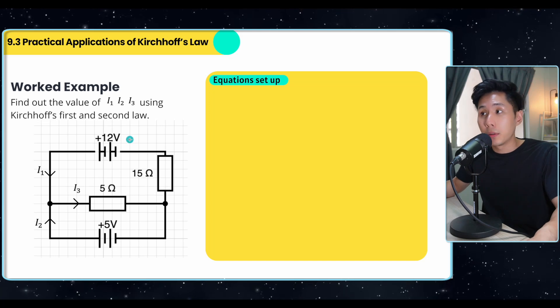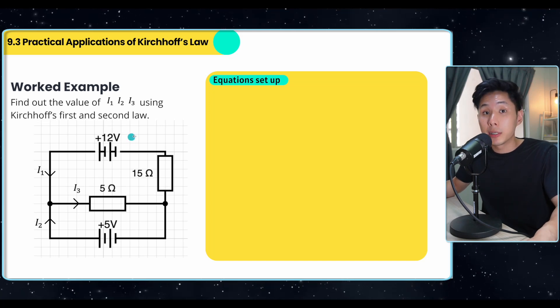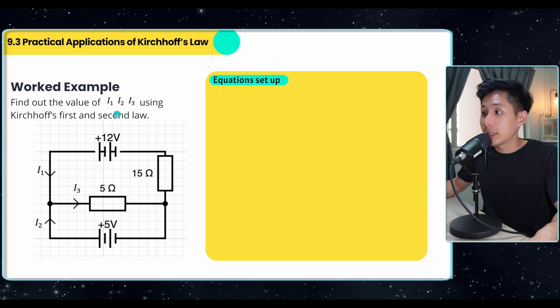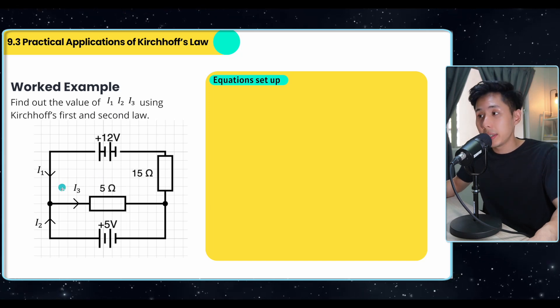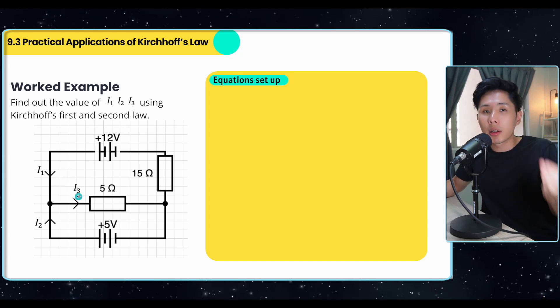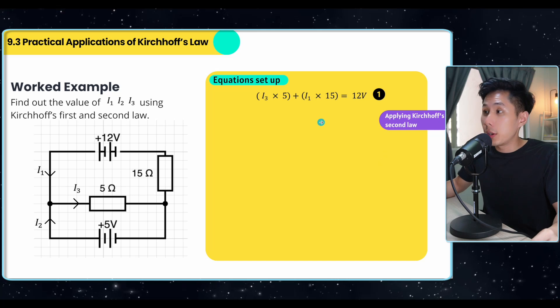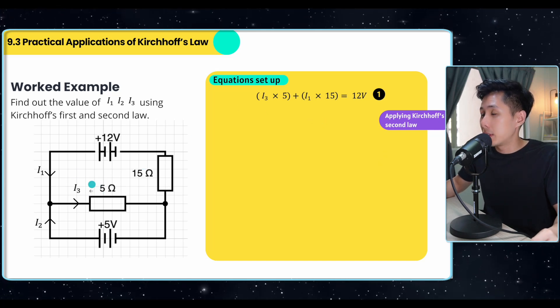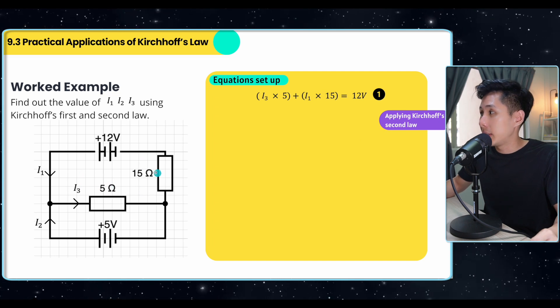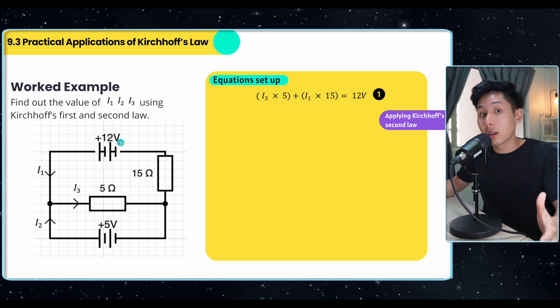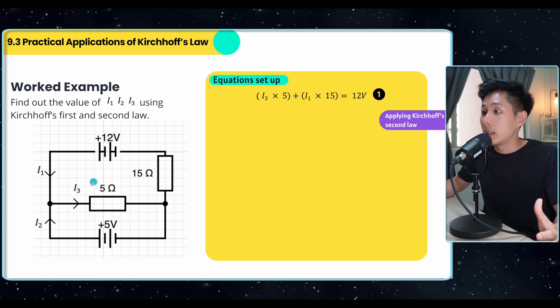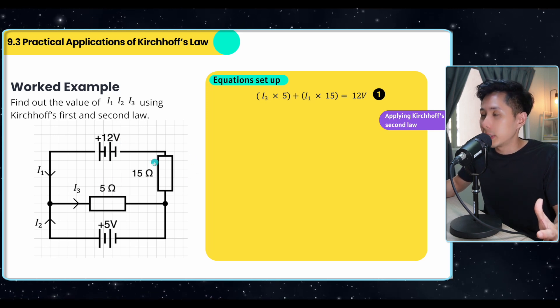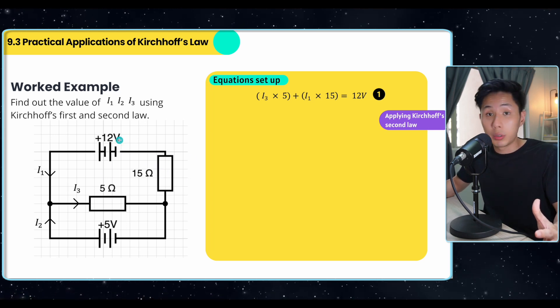So there's another example that showcases how we can use both laws to solve a question. In this question, they ask us to find out what's the value of I1, I2, and I3, using our knowledge on Kirchhoff law. So the first equation that you can set up is I3 times 5, the voltage here, I1 times 15, will be equal to 12. Because that's Kirchhoff's second law. They say that the voltage across this component plus this component should be equal to the source.